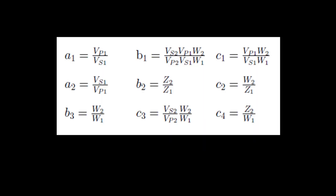Here are the coefficients of the Zoeppritz equations. W1 is the S wave impedance of the top half space, and W2 is the S wave impedance of the bottom half space. Z1 is the P wave impedance of the top half space, and Z2 is the P wave impedance of the bottom half space. VS1 is the S wave velocity of the top half space, VS2 is the S wave velocity of the bottom half space, and VP1 is the P wave velocity of the top half space.